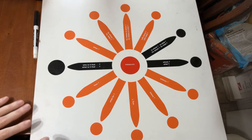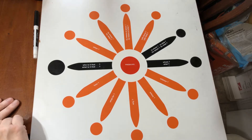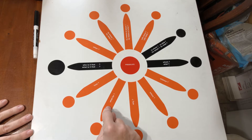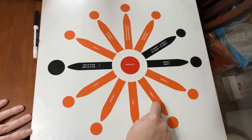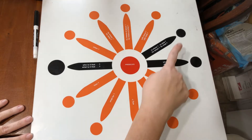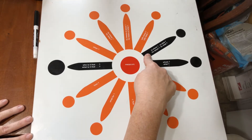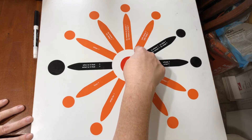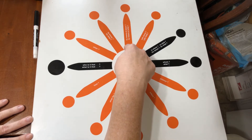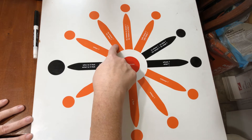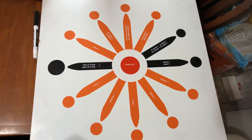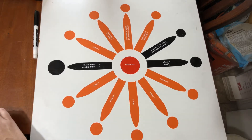This one adds a few more questions: how, what, for, why, where, whence, to whom, to what, for whom, for what, with whom, with what, by means of whom, by means of what, by whom, by what, and when. You won't use all of these, and some of them like 'whence' you might not use very often at all, but they're there just in case.